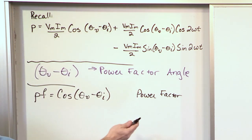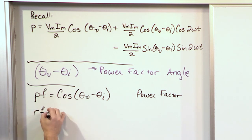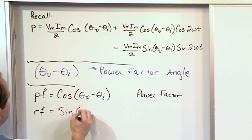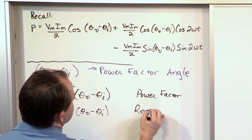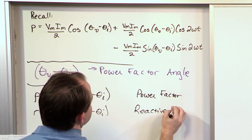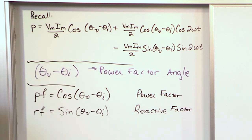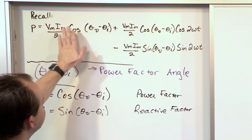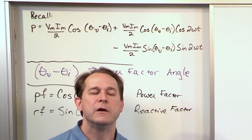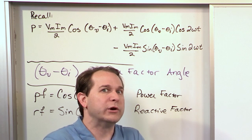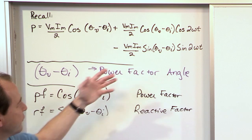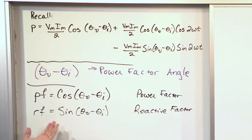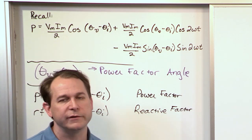And then, because we have to make it even more complicated, we have something called the reactive factor, which is the sine of the same angle, theta V minus theta I. Why do we name them this way? Because for real power, the cosine of this angle pops up in those terms, so that's the power factor. The reactive factor is the sine, which pops up in the third term important for reactive power.